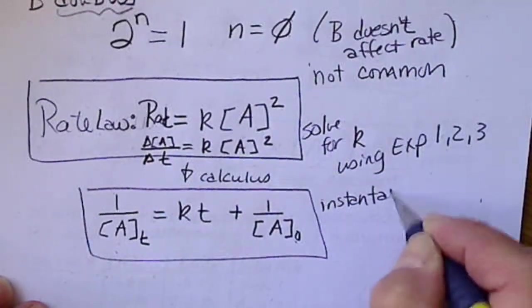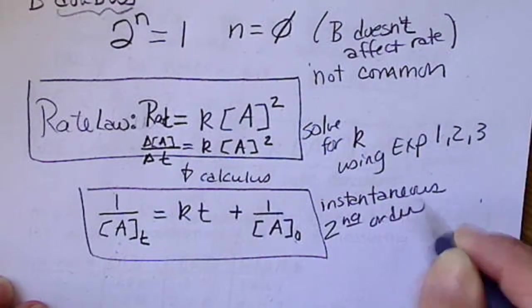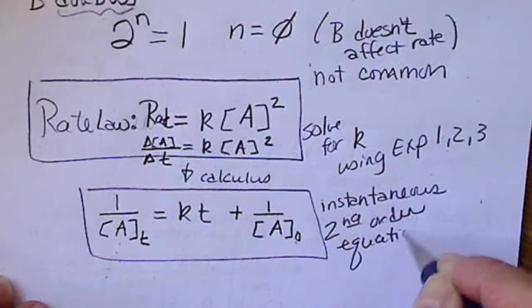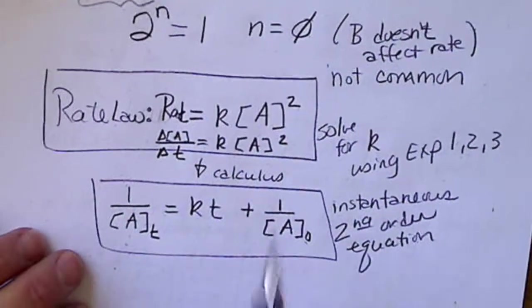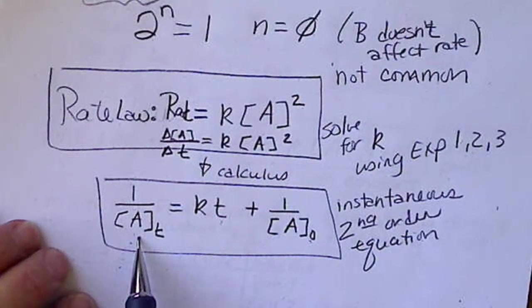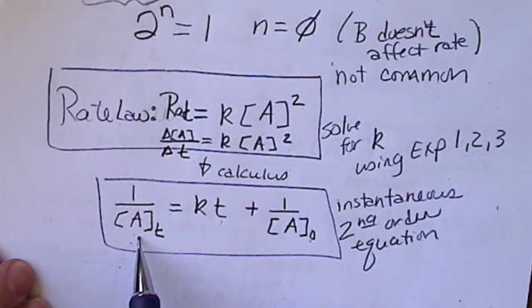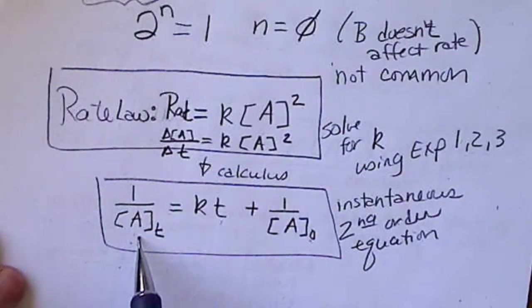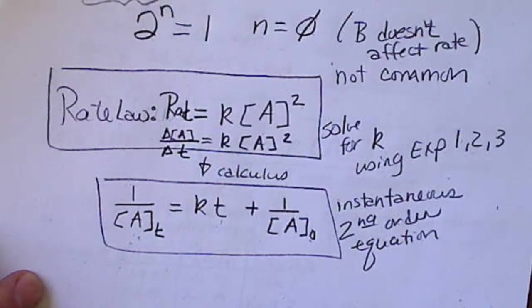So, this is an instantaneous, second order equation. And this is valuable because we can find out at any time T how much of a reactant would be left over. Now, if we're doing something in the lab that may not be as important as if we were trying to determine how much pharmaceutical drugs would be in someone's blood after a certain amount of time.